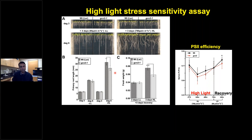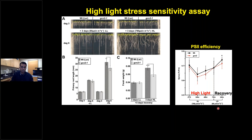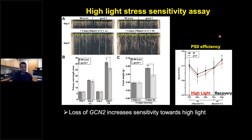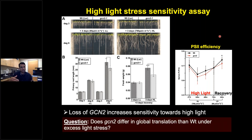The gcn2 mutant seedlings also show reduced fresh weight compared to wild type, and measurement of PSII efficiency after three days of high-light stress followed by a 24-hour recovery shows that gcn2 mutant seedlings lag behind wild type in PSII efficiency recovery. This definitely suggests that loss of GCN2 increases sensitivity to high-light stress.